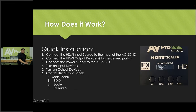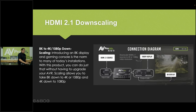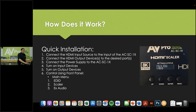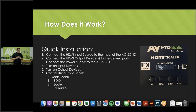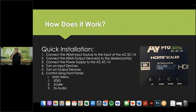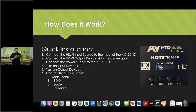Quick installation is very simple: connect the HDMI input, connect the HDMI output, connect the power supply, turn on the input, turn on the output, and you're ready to control it. The front panel has an Enter button to open the main menu, then Up, Down, and Enter to navigate three menu items: EDID, Scaler, and Extracted Audio. For Extracted Audio, you simply turn it on or off.